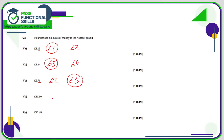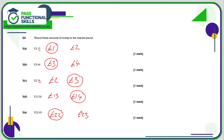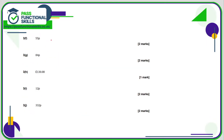£13.50 is between 13 and 14 pounds. Now 50 pence is exactly halfway, so when it's halfway we round up to 14 pounds. £22.49 is between 22 and 23 pounds; 49 is less than 50 so we round down to 22. Fifty-five pence is between zero pounds and one pound; 55 pence is greater than 50 so we round up to a pound.